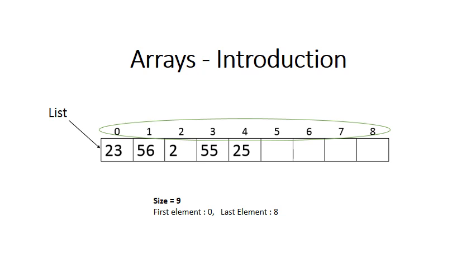So each one of those elements you can identify by their position. So if an array has a size of nine but it currently contains five numbers then we say the number of elements in this array is five. So it has a size of nine and number of elements is five.